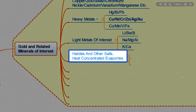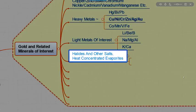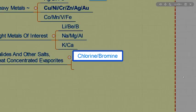These are chlorides and bromides and iodides, etc. These are heat-concentrated evaporites of chlorine and bromine, and also include other light metals, like calcium, magnesium, sodium, and potassium.